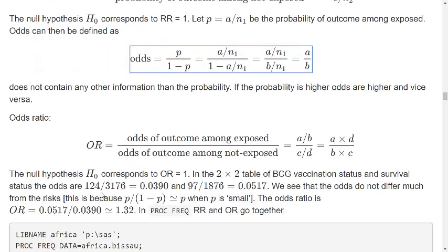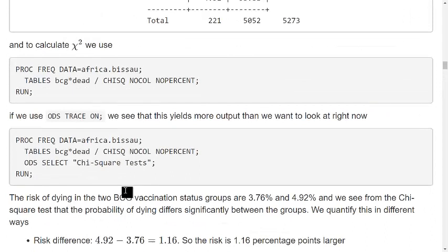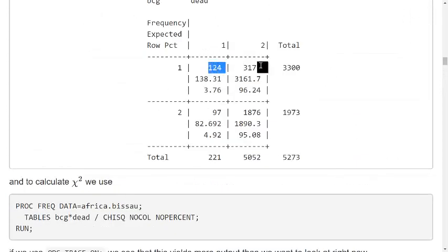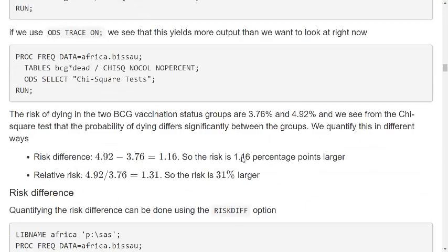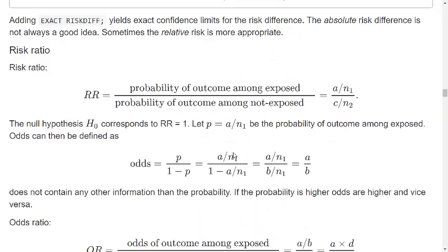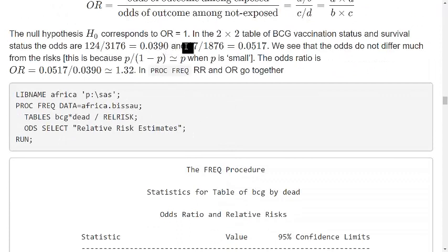Now in the 2 by 2 table, I can take the numbers and just go up and look at the 2 by 2 table up here. I can take these four numbers and I can calculate the odds in group 1. I can calculate the odds in group 2. We can see that these odds are not very far away from the risk. This is a mathematical thing. Whenever p is small, this is true that the odds are very close to the risk. So the odds ratio is somewhere around 1.34.